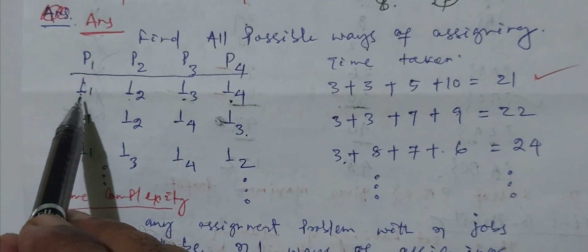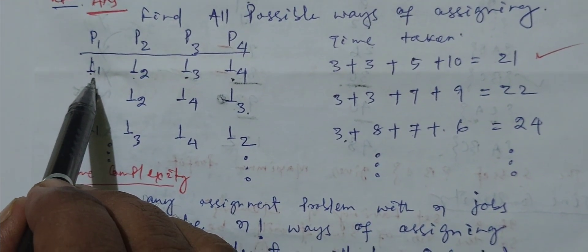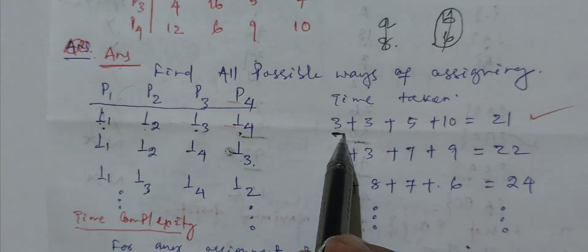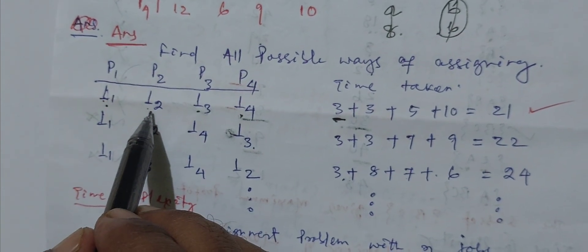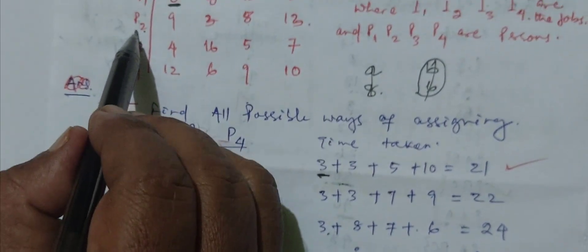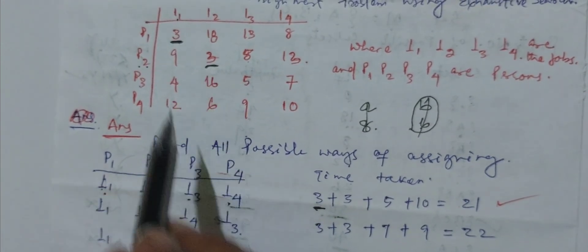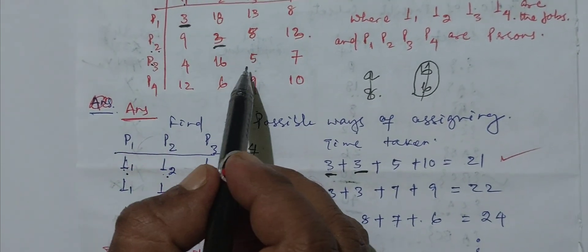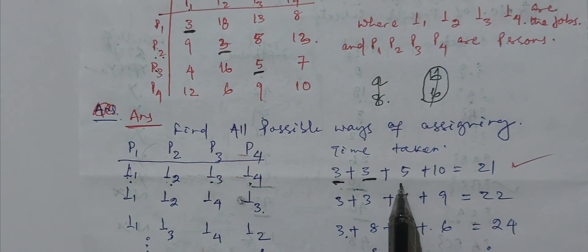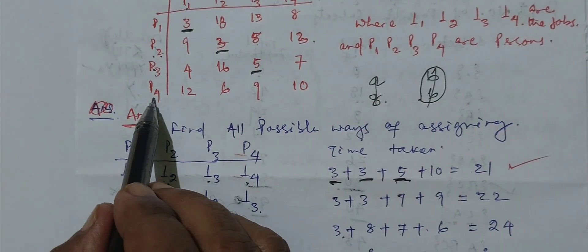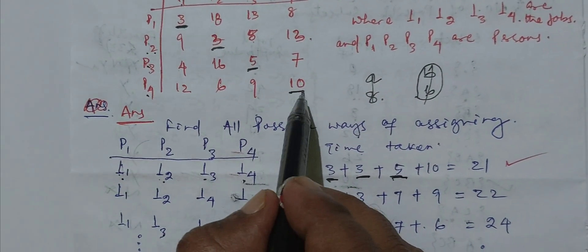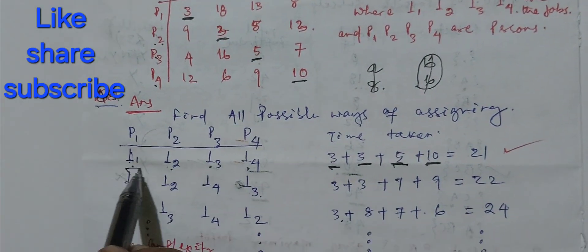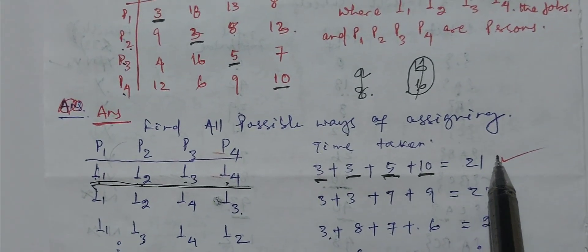If person 1 is given job 1, how much time is it taking? It is 3 from this table. Similarly, person 2 is assigned with job 2, it is taking 3 days. Person 3 is assigned with job 3, it is 5, so I added 5 here. Person 4 is assigned with job 4, I assigned 10 here. So total in this sequence, total time taken is 21 days.